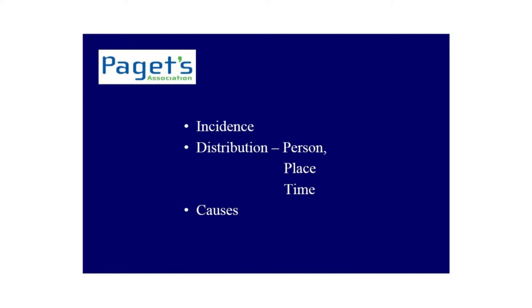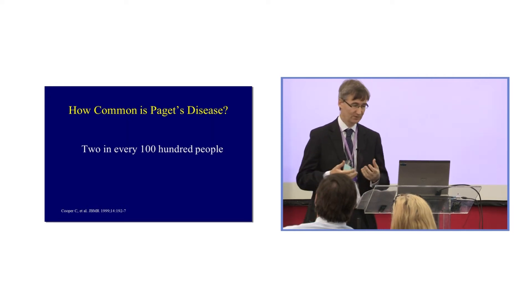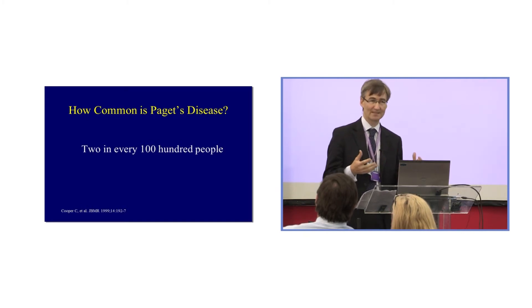How many people have Paget's disease? There is a challenge in defining how frequent this disease occurs because a lot of people don't have symptoms, so if we just survey people and ask them if they have a diagnosis, we're going to underestimate the frequency. In order to look at occurrence of the disease, we really need to look at bone itself — we can see bone under the microscope, but that's not really relevant for clinical practice. The best way to look at bone is by doing X-rays.